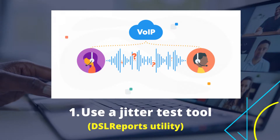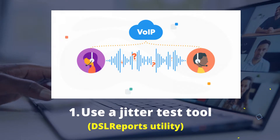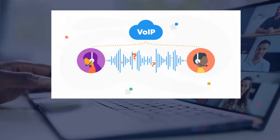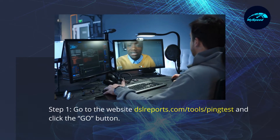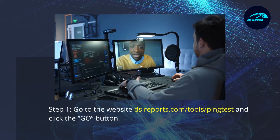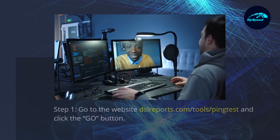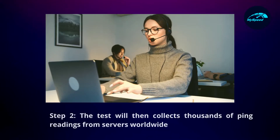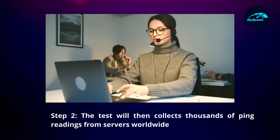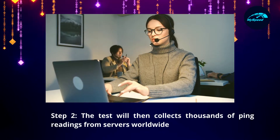You can use the DSL Reports utility to run a jitter test. Step 1: Go to the website dslreports.com and click the Go button. Step 2: